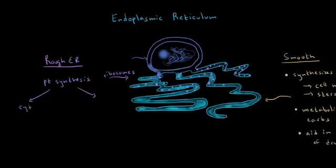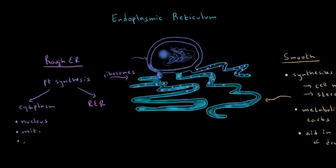We have those that are made in the cytoplasm and those that are synthesized in the rough endoplasmic reticulum. Proteins that are synthesized in the cytoplasm will end up in a number of places. They might end up in the nucleus, they might end up in mitochondria, they might end up in peroxisomes, or they might just stay in the cytoplasm — maybe that's where they belong.